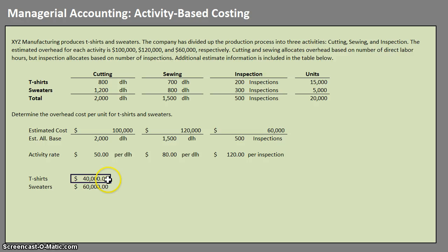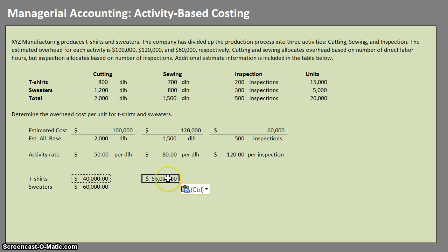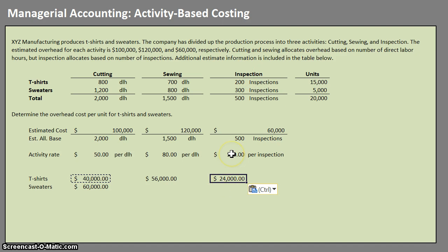For sewing, $80 times 700 direct labor hours gives $56,000 allocated to t-shirts. For inspection, $120 per inspection times 200 inspections for t-shirts gives us $24,000 allocated to t-shirts.